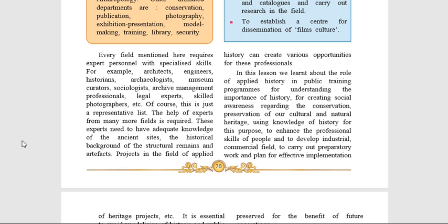In this lesson, we have learned about the role of applied history in creating social awareness regarding conservation and preservation of our cultural and natural heritage. This study is essential to avoid damage to historic places and to ensure that they are preserved for the benefit of future generations. We have now come to the end of the lesson. Please write the answer to the given question: suggest at least 10 solutions for preservation of the sources of history. Thank you.